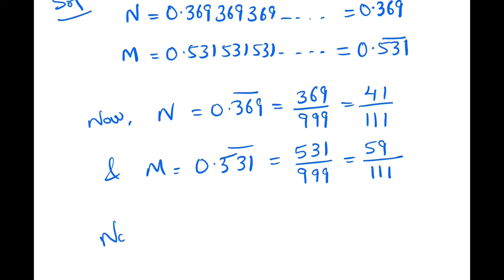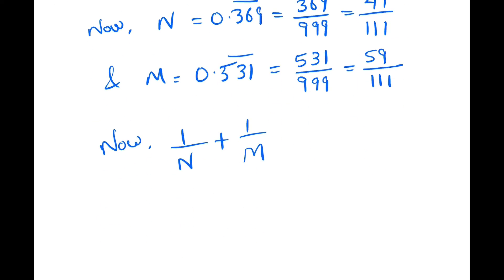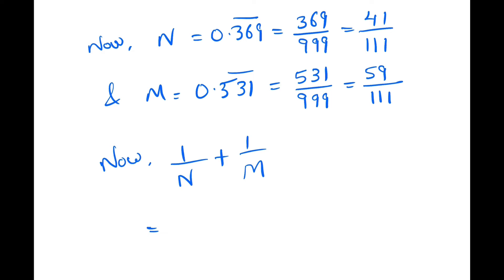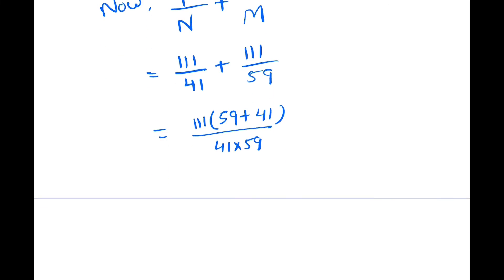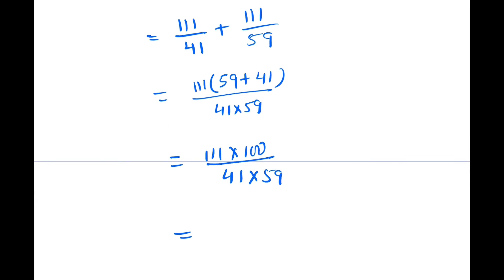So we can write 1 by N plus 1 by M, and this equals, substituting the values of N and M, we get 111 upon 41 plus 111 upon 59, and this is equal to 111 into (41 plus 59) upon 41 into 59, which gives 11100 upon 2419. And 11100 upon 2419 is our answer.